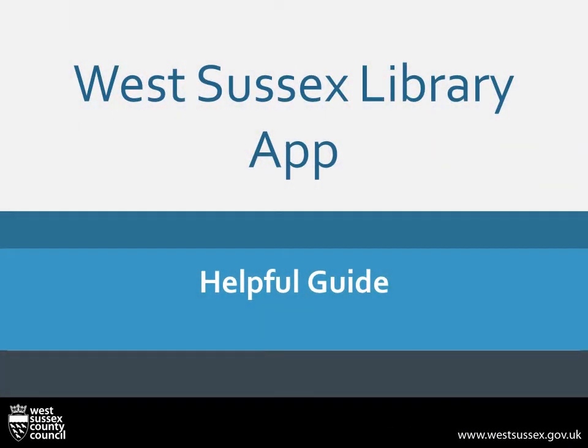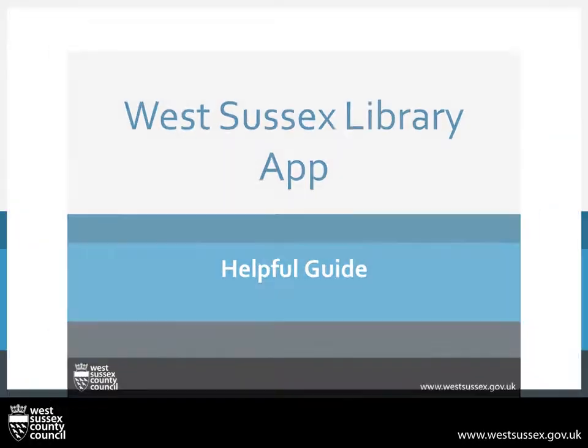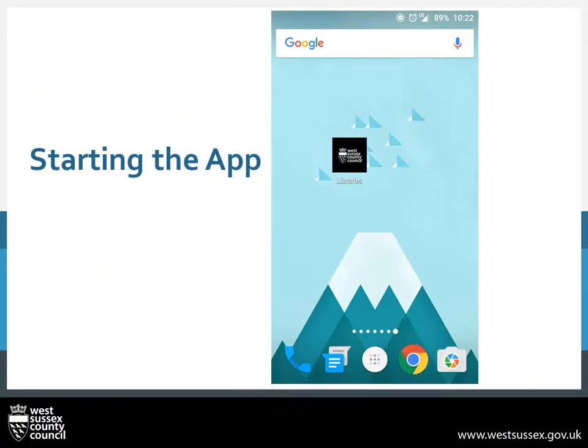Hello and welcome to this helpful guide on using the West Sussex Library app. First things first, how to open the app. It should appear as a black square with the West Sussex County Council logo. Press on this and it will open the app.